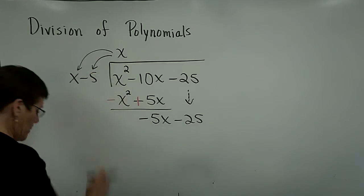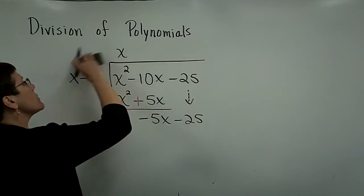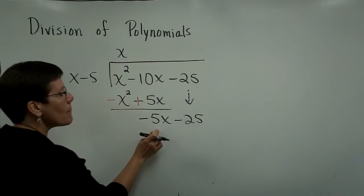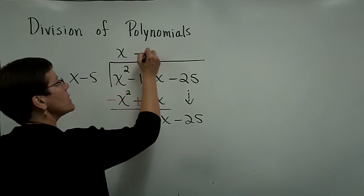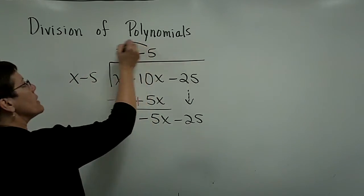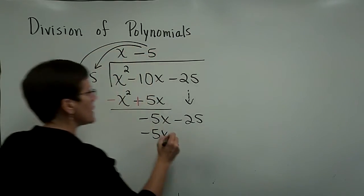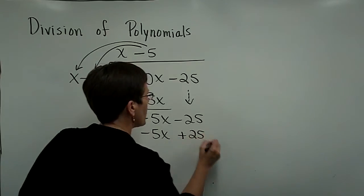So what times x, let's get rid of these arrows so we don't get confused here. What times x gives us a minus 5x? And that's a minus 5. So yup, a minus 5 times x gives me that minus 5x. And a minus times a minus is a positive, 25.